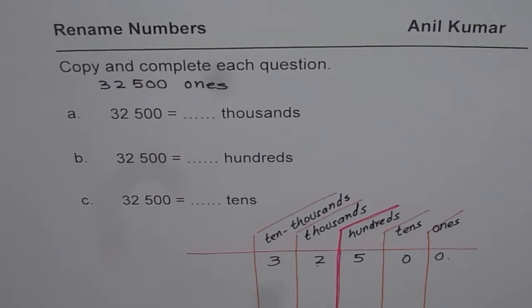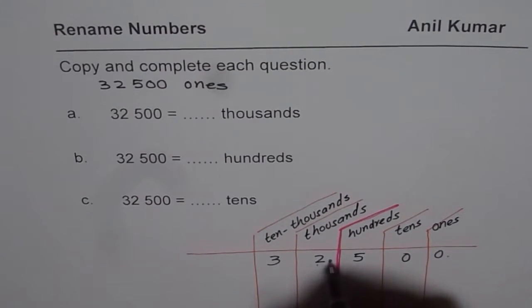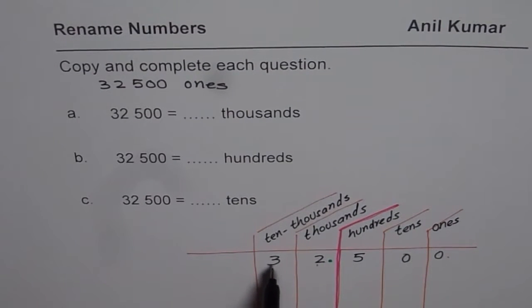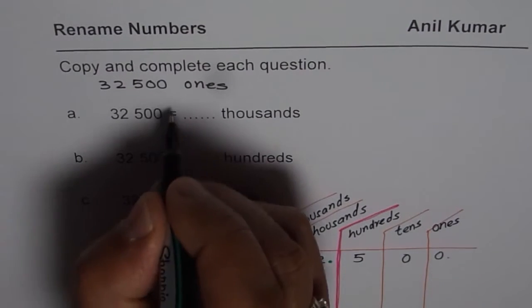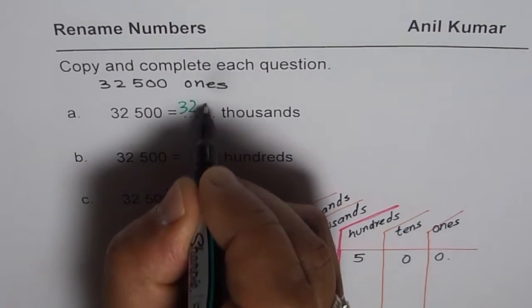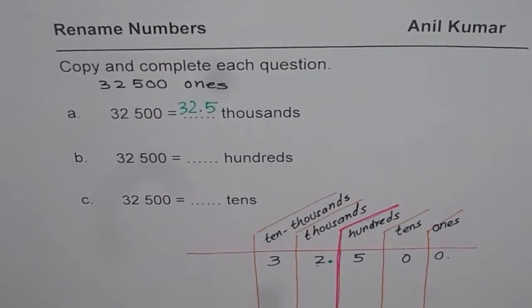When you want to rename this number as thousands, then place a decimal after thousands. Place the decimal here, what do you get? You get 32.500. Drop the zeros, so we can write this as 32.5 thousands.